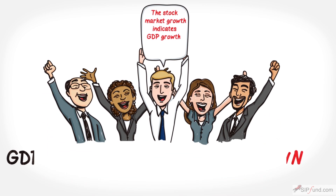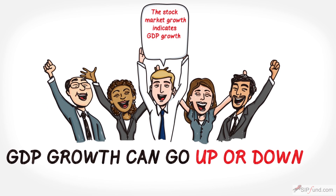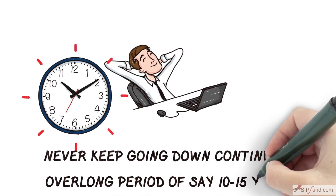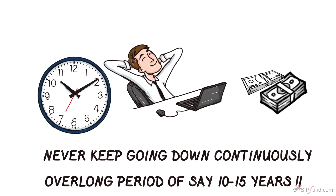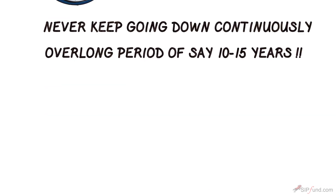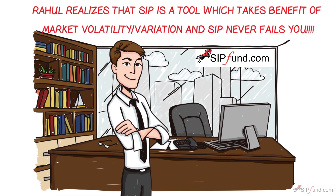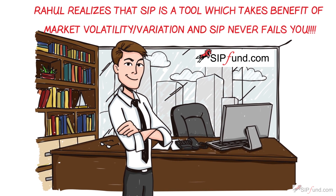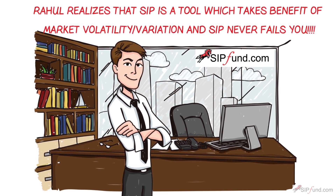Stock market growth indicates GDP growth, and while GDP growth can go up or down, it can never keep going down continuously over a long period of 10 to 15 years. Rahul realizes that SIP is a tool which takes benefit of market volatility, and SIP never fails you.